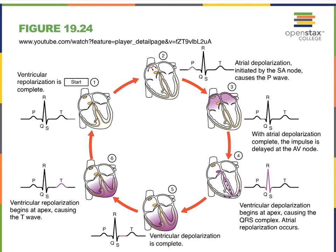When the depolarization reaches the AV node, we might see the transition from the P wave into the QRS complex — that little interval in between. We see a delay there because all of the depolarization waves have to be collected at the AV node. Then via the bundle of His, the bundle branches, and Purkinje fibers, the ventricles begin to depolarize, and that results in our QRS complex.